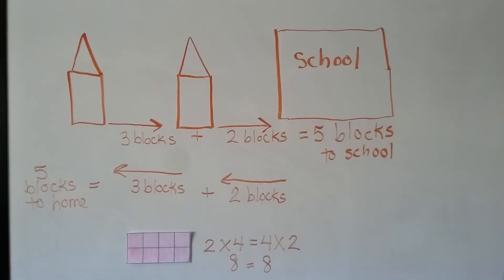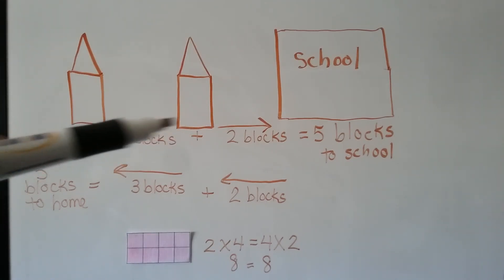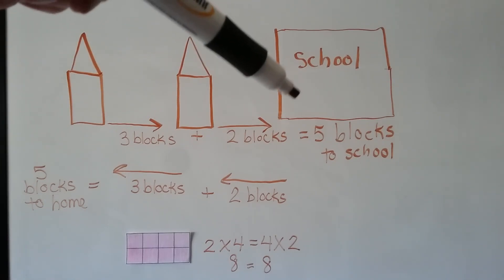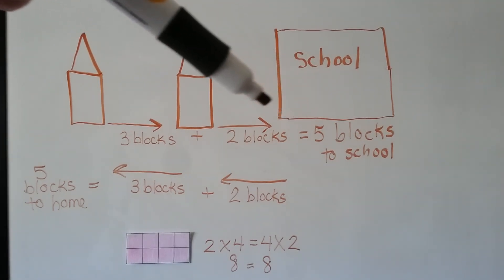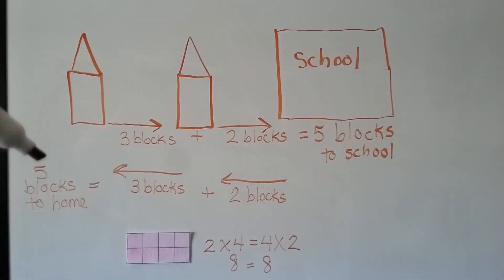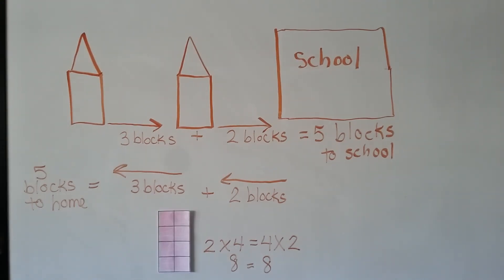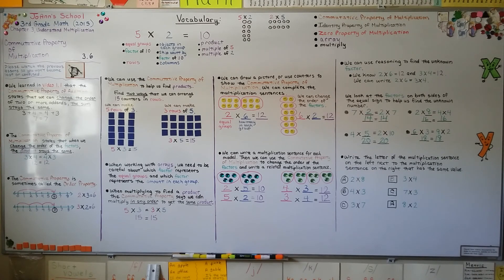The commutative property of addition told us that we can add in any order and get the same amount — like walking 3 blocks to a friend's house then 2 more to school is 5 blocks, and coming home 2 blocks to a friend's then 3 blocks home is still 5 blocks. With multiplication, we can put the factors in any order and get the same product. We can do 2 times 4, which equals 8, and flip it on its side to get 4 groups of 2 — still equal to 8. In our next lesson, we're going to talk about what happens when we multiply by 1 or 0 and the properties that go with them. I hope you're having a wonderful day, and I'll see you next time. Bye!